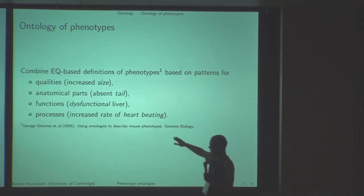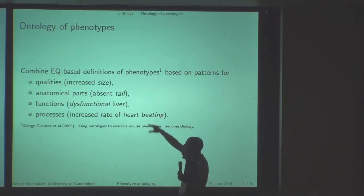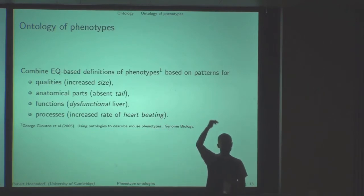Now there's a little bit more. There's a way, an entity-quality way of describing phenotypes based on the entity which is affected in such a phenotype. It may be an anatomical structure, but it may also be a function, it may also be a process, and the quality which says how this entity is affected. So we have whole organism attributes, increased size, anatomical parts may be missing or extra parts may be present. There may be functions and dysfunctions, and there may be processes which have extended durations, they may have frequencies and so on. And based on these different patterns, we have to combine these ontologies, this large set of ontologies which are related to phenotypes in different ways.